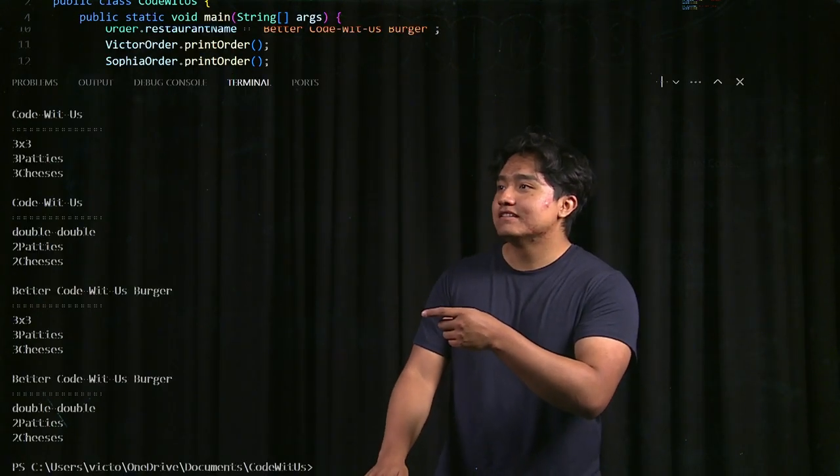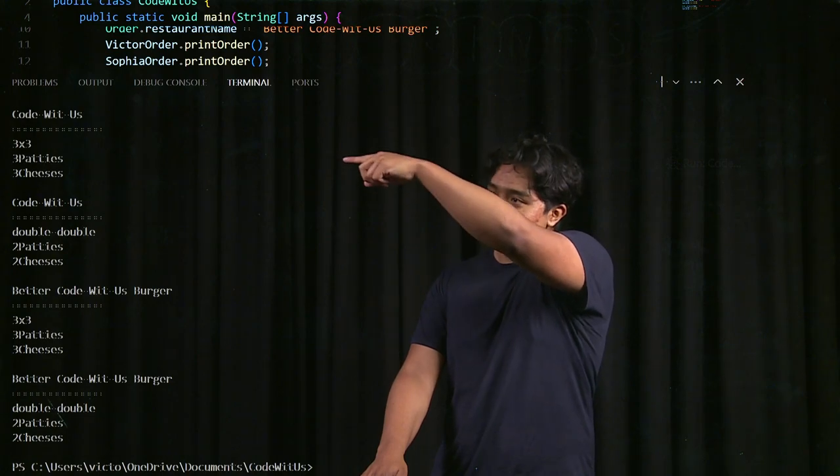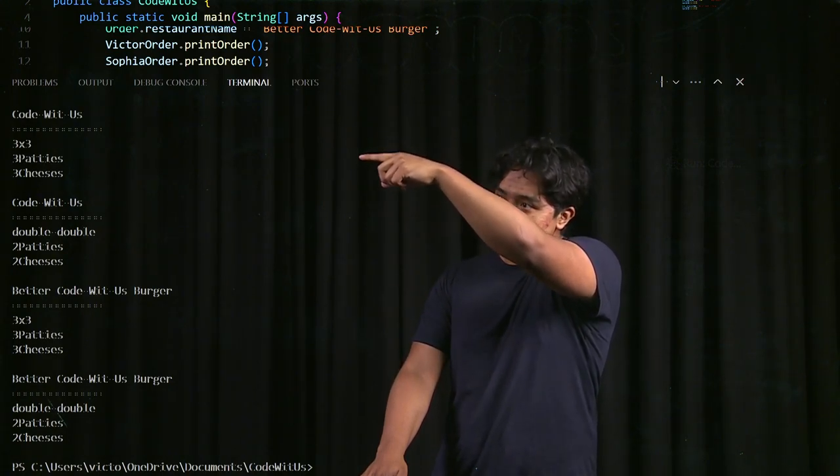So here we can see the output. As we expect, it printed out codewithus then Victor's order, which was a three by three with three patties and three cheeses.